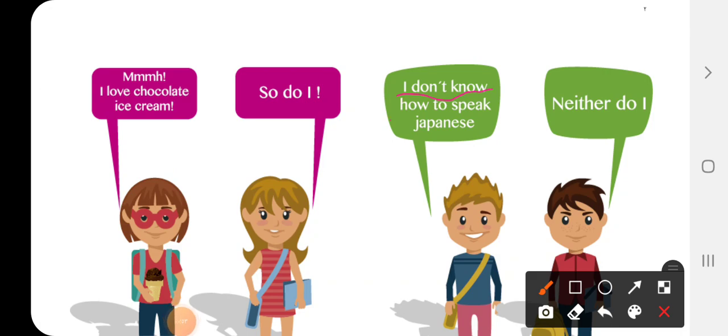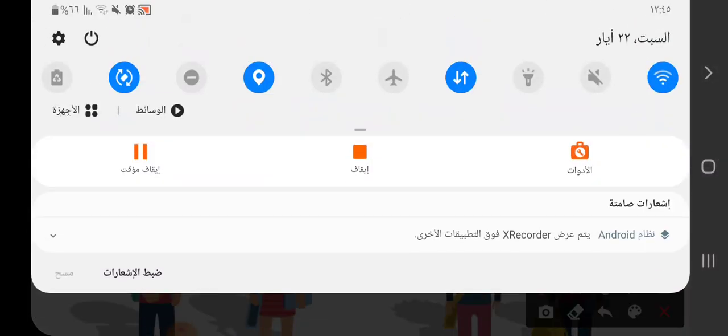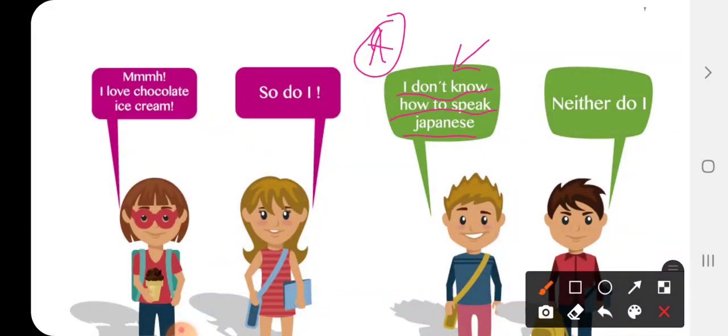This is the positive sense, the statements, right? Now let's go to the second. I don't know how to speak Japanese. Here we have negative statements and agreement, okay?